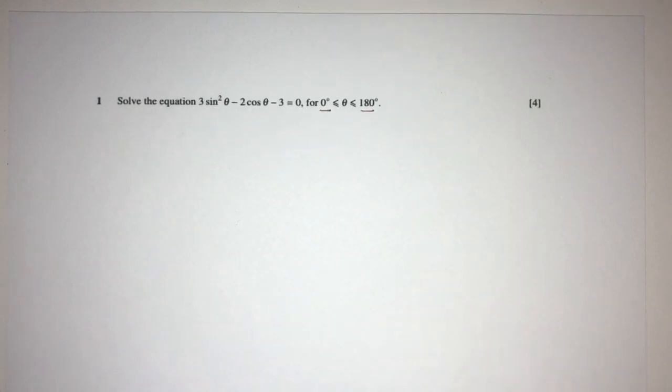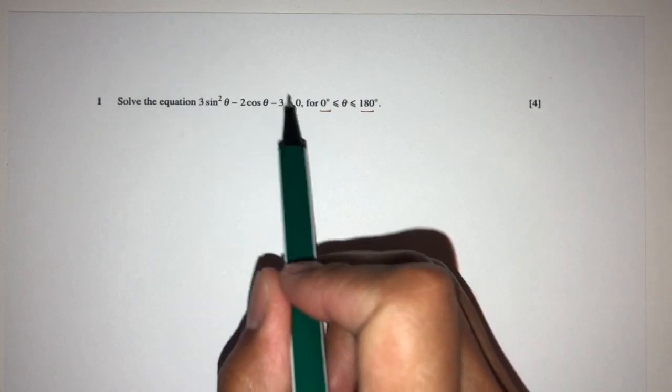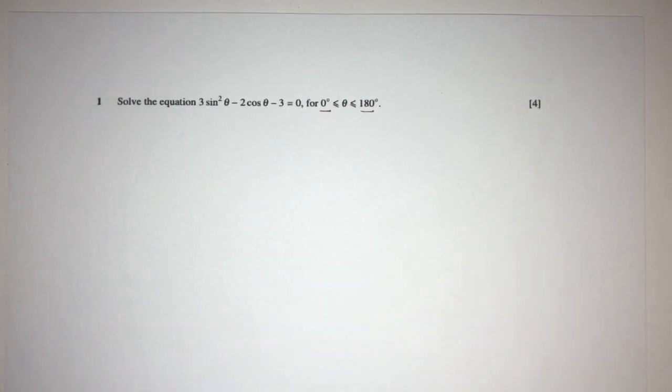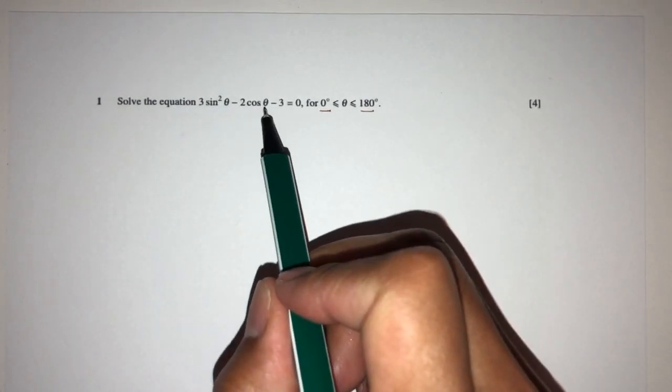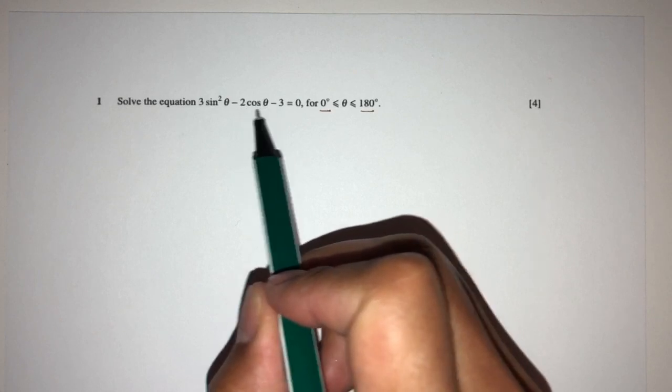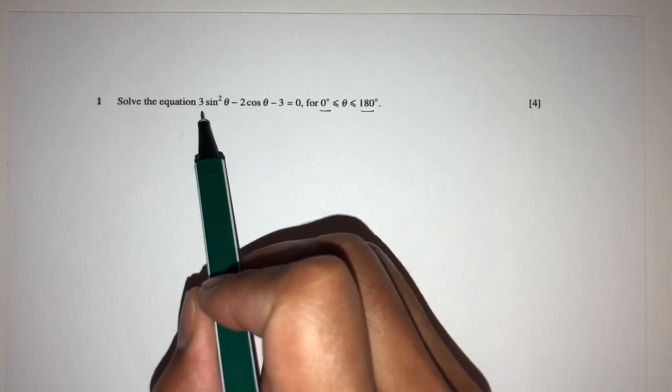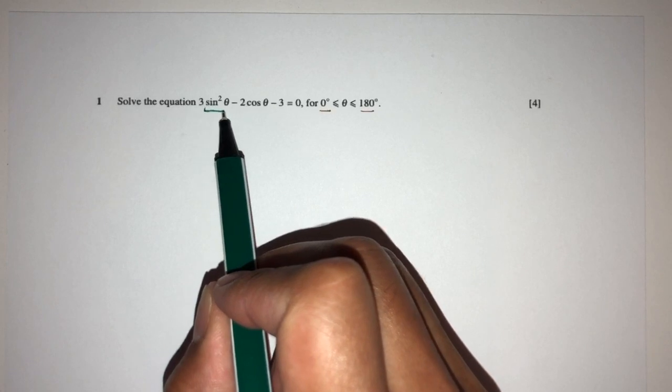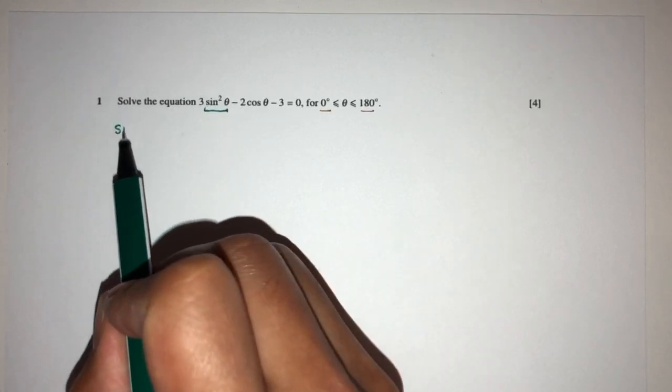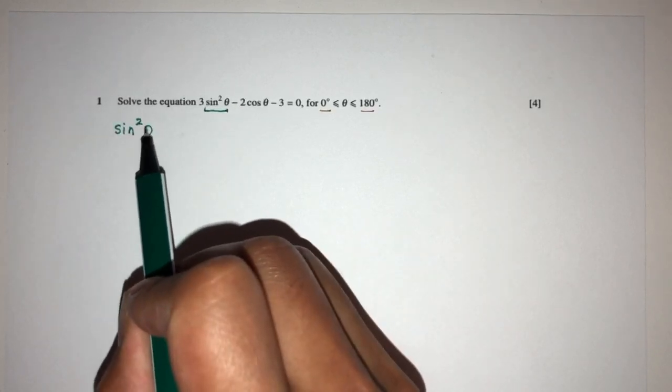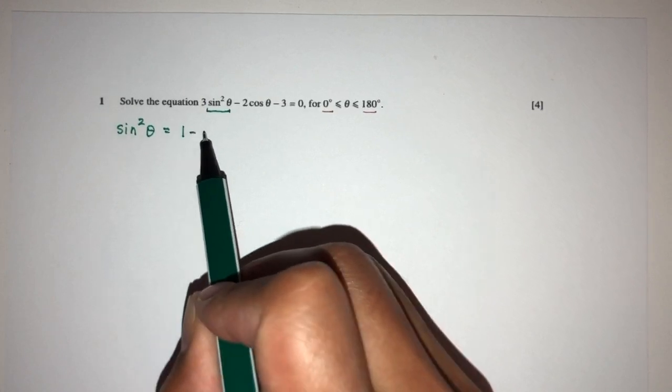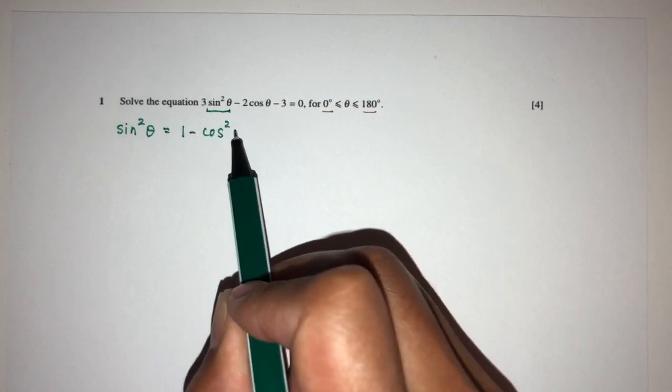Now, how are we going to solve this? So at first view, we will have to kind of play with the equation. Now here we have cos theta, so obviously we cannot change much with this one. However, for this one we can change something. We realize that sine square theta is equal to 1 minus cos square theta.